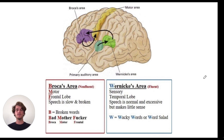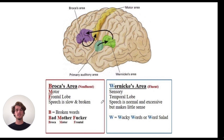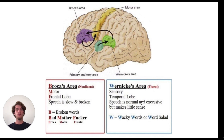Broca's area, being in the motor area, is going to be responsible for creating speech. So when Broca's area is damaged, the patient will have difficulty producing speech. In Wernicke's area, it's just the opposite — they're going to be able to talk fine, but their sensory processing of language is going to be damaged. Therefore, they're going to be able to speak fluently, but not with proper syntax or meaning.